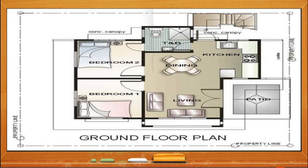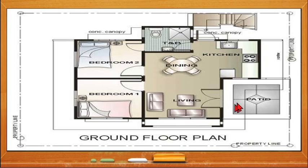This is an example of a floor plan. As you can see, it will contain the parts of the house — bedroom, living room, toilet and bathroom, canopy, kitchen, and patio. You can also see here the walls, the dimension of the walls, and the shape of the walls.